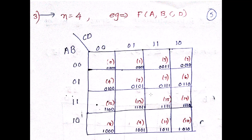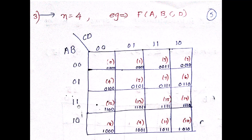For a four-variable K-map, AB comes on one axis and CD on the other. AB follows Gray code: 00, 01, 11, 10, and CD also follows Gray code: 00, 01, 11, 10. The resulting cell values are: 0000=0, 0001=1, 0011=3, 0010=2, 0100=4, 0101=5, 0111=7, 0110=6, 1100=12, 1101=13, 1111=15, 1110=14, 1000=8, 1001=9, 1011=11, 1010=10. In decimal form the cells read 0 through 15.